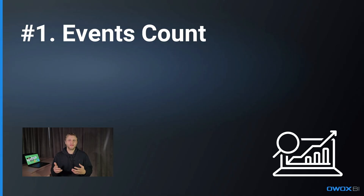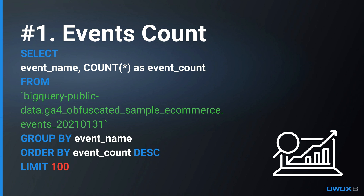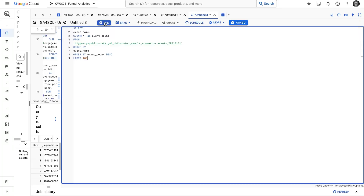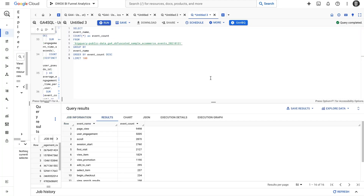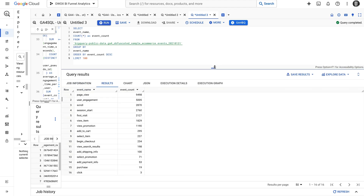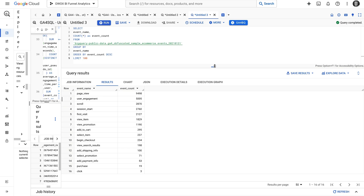First, let's look at which events you are collecting from your website and the number of times each event occurred. I'll use a simple query to make this happen. You can find this and other queries in the collection I've prepared for querying GA4 data — linked in the description. Here is how the query looks: we'll select the event name and the count of rows in the table from our specific dataset table. We'll group them by event name and order by the number of each event occurred descending. Let's run that in BigQuery and see what happens. As you can see, we got a list of event names which have been collected as well as the number of times each of those events happened.